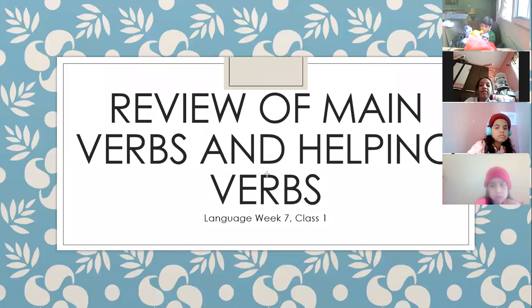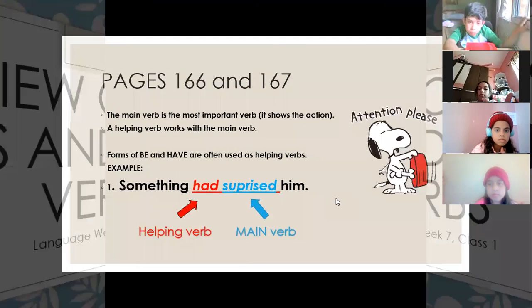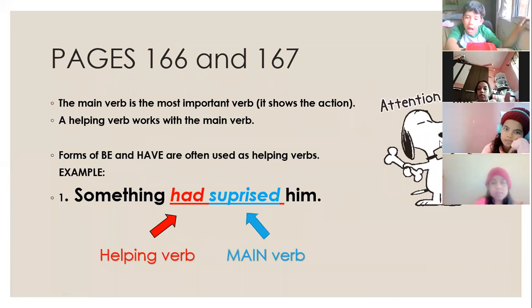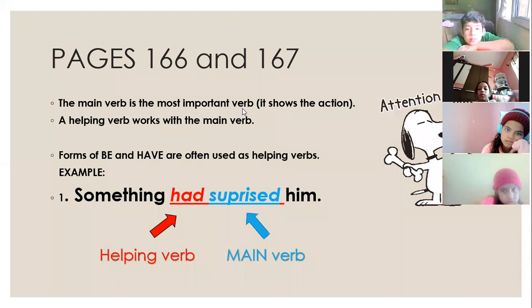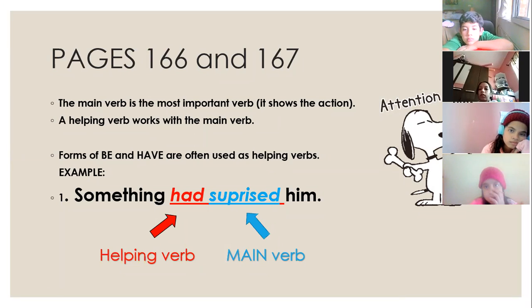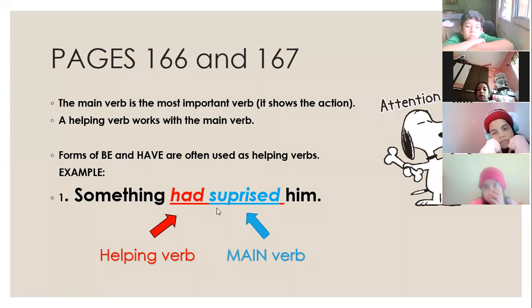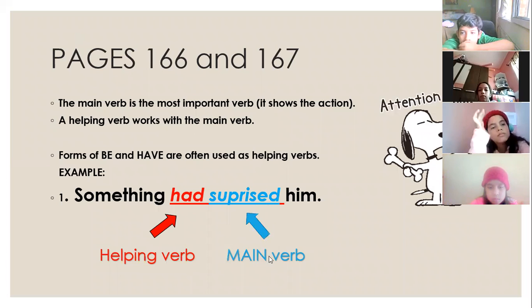Good morning guys, welcome to language class. Let's begin our review with main verbs and helping verbs on pages 166 and 167. The main verb is the most important verb — it shows the action. A helping verb works with the main verb; it's like a linking verb. Forms of 'be' and 'have' are often used as helping verbs. Example: 'Something had surprised him.' 'Had' is the helping verb; 'surprised' is the main verb.